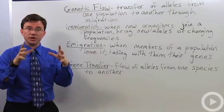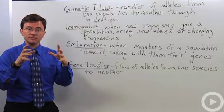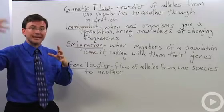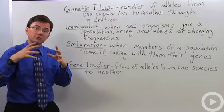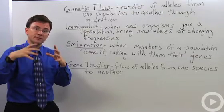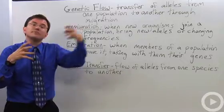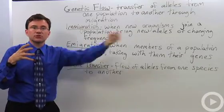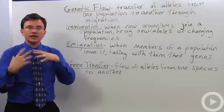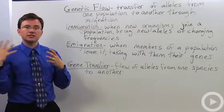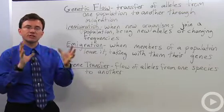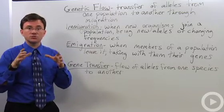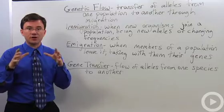Gene flow is when you have your population of organisms and then either through migration, immigration — new organisms come in bringing with them new stuff — or by emigration, exiting, you have some people leave. And that can cause some changes in the relative frequencies or percentages of genes within that population.